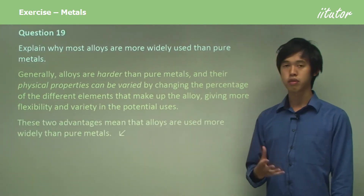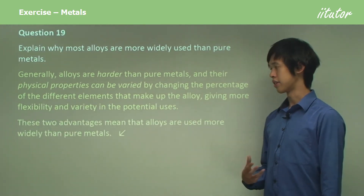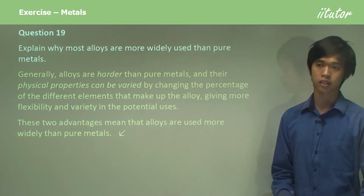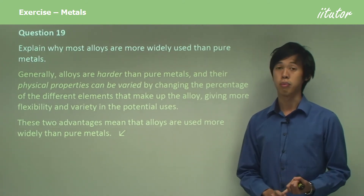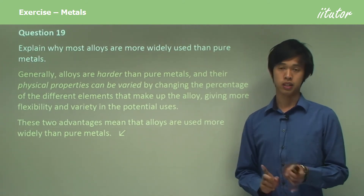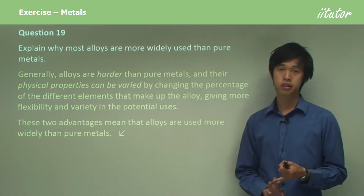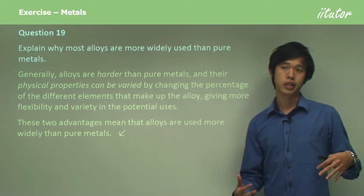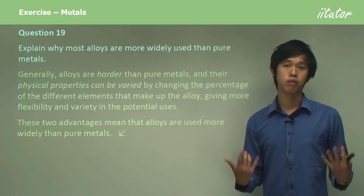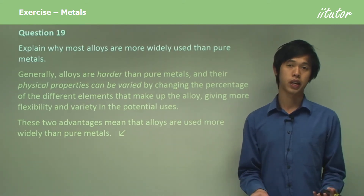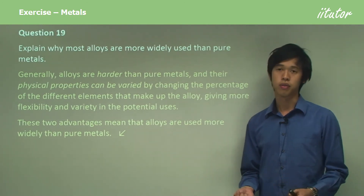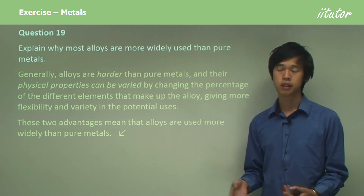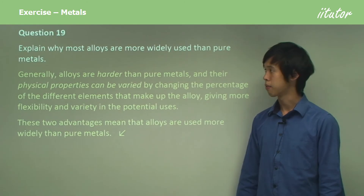So these two advantages mean that alloys are used more widely than pure metals: one, we can actually make their physical properties better in some ways, and two, because we can vary the physical properties, we can use this metal for more different applications compared to if we just had a pure metal.